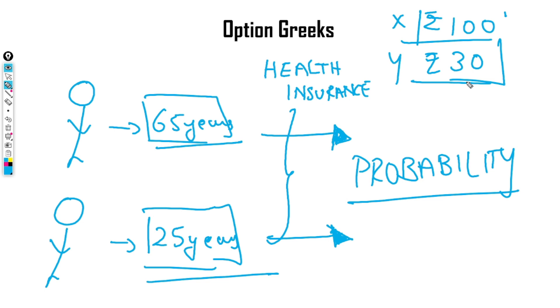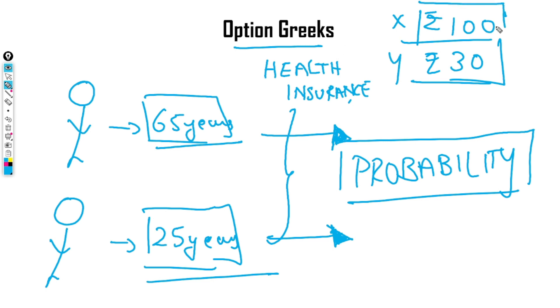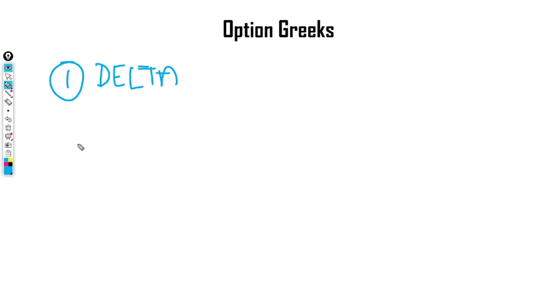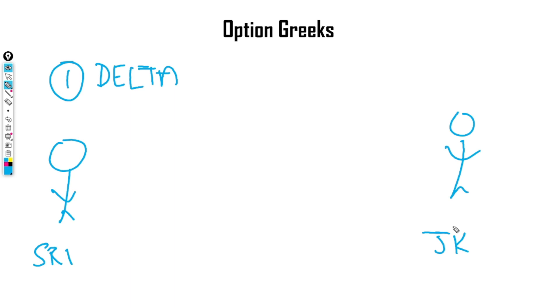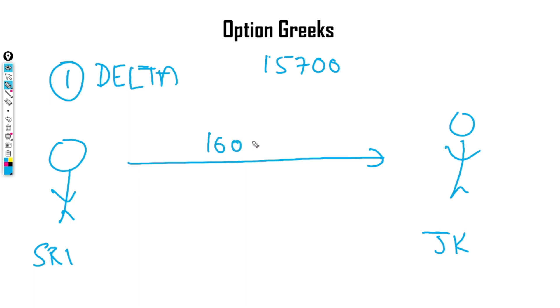The entire option Greeks revolves around this concept of probability. Option Greeks are just going to tell us why one option is priced at 100 whereas another is priced at 30. The first Greek we are going to learn is called Delta. Let's take the example of Shrikant and JK. Assume Nifty is trading at 15,700 and they enter a 16,000 call option contract with expiry in 7 days.